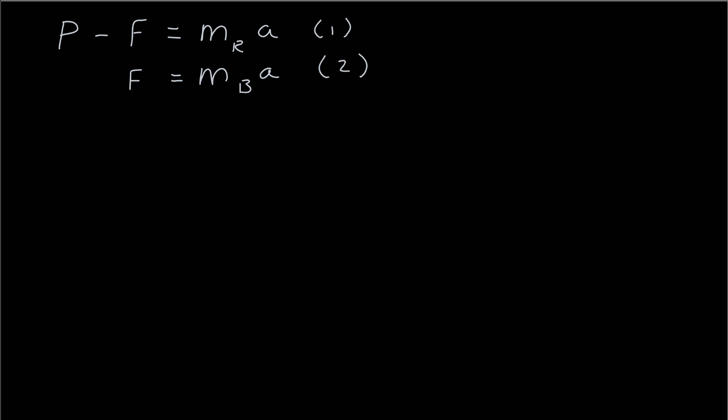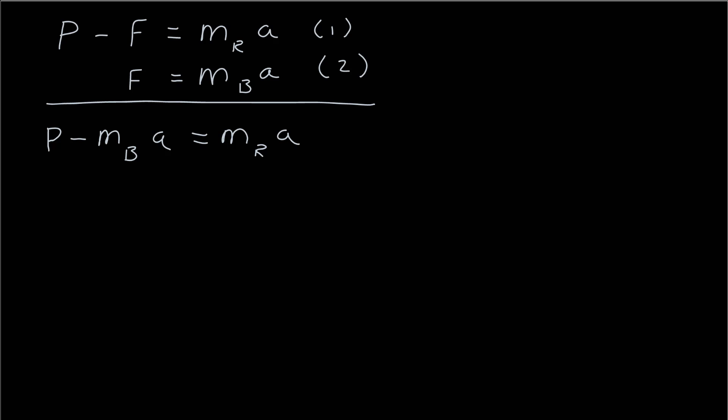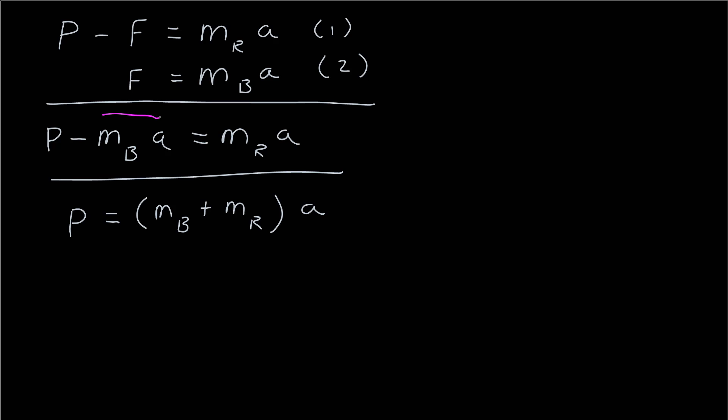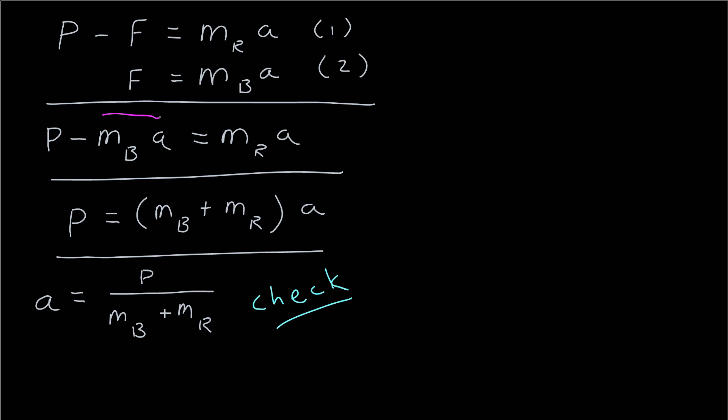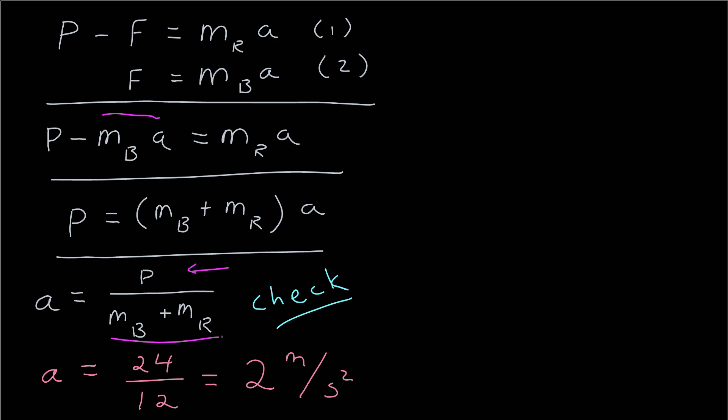I'll substitute F and A into equations one and two, then substitute equation two into equation one to eliminate the force. Solving for A first: I bring one term to the other side, factor out A, and divide both sides by the masses. The result is that the acceleration of the system equals the pushing force divided by the total mass — which makes sense, treating the whole system as one object with one force. With a 24-newton push and a total mass of 12 kilograms, the acceleration is 2 meters per second squared.